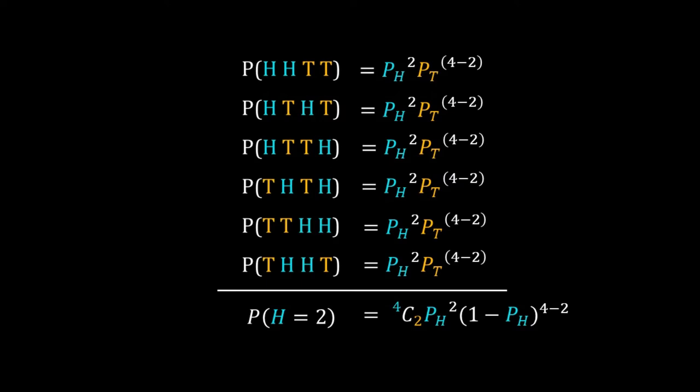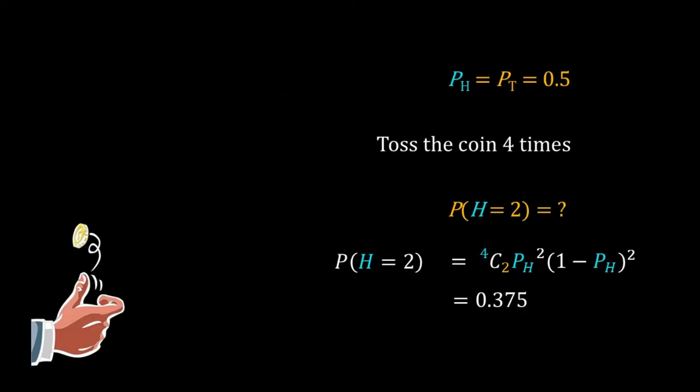Since probability of head plus probability of tail equals one, the probability simplifies to 4C2 times p_h squared times (1 minus p_h) to the power (4 minus 2). For a fair coin, p_h equals p_t equals 0.5. Plugging in these values, the probability of getting two heads in four tosses is 0.375.